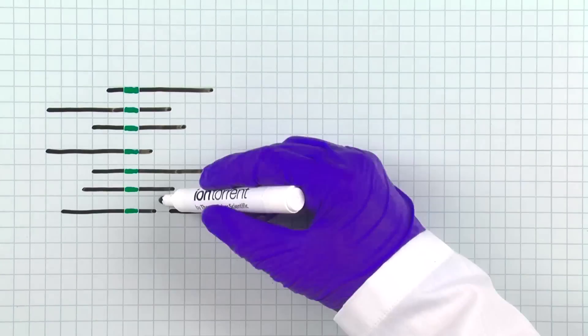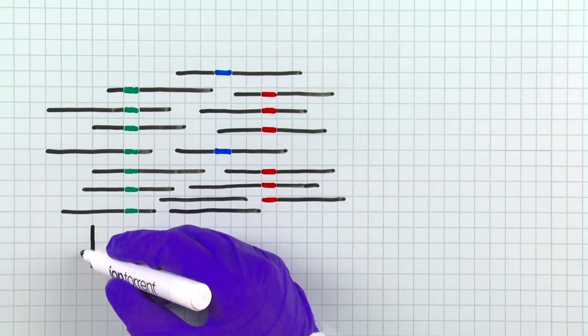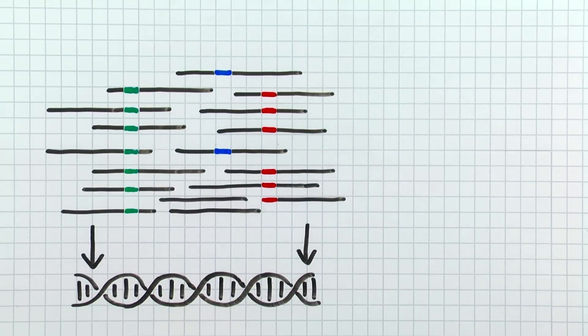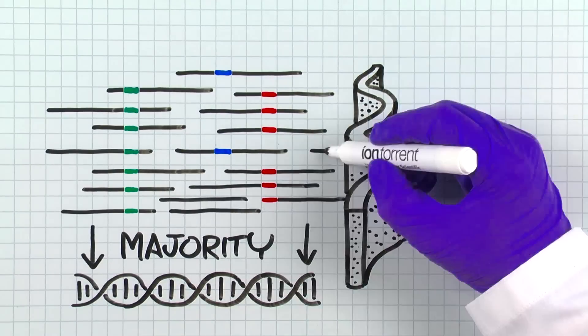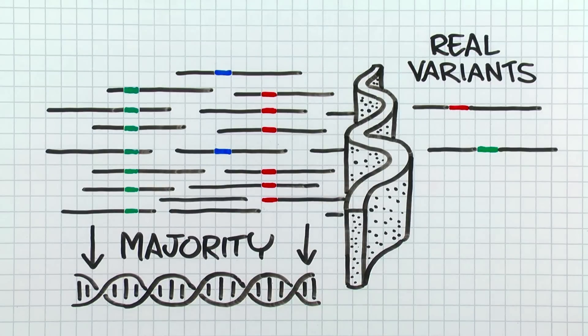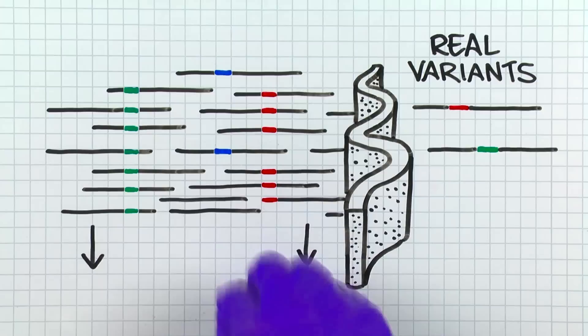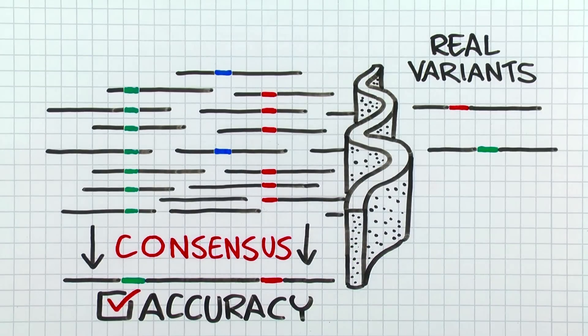Determining the true variants from base calling errors is where the consensus accuracy comes into play. One of the advantages of NGS is the ability to produce millions of sequencing reads. When we pile these reads up together along the reference, what we get is the power of majority. We can filter out mismatches that are likely to have been base calling errors and keep those that are likely to be real variants using statistical inference. What we get in the end is a consensus sequence and its corresponding consensus accuracy with respect to the reference.